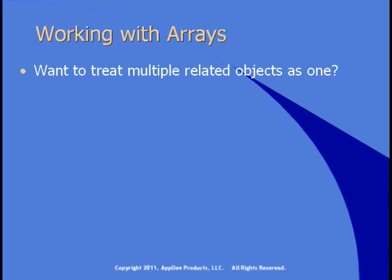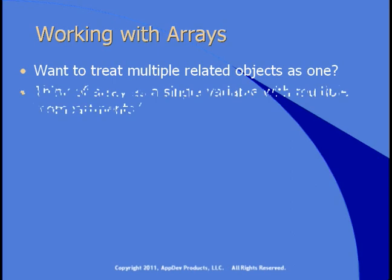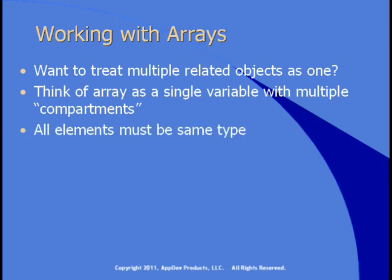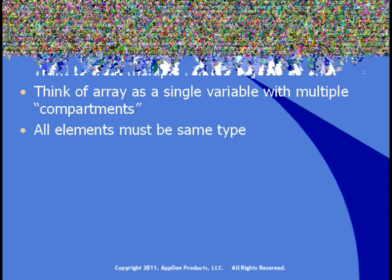What if you want to treat multiple related objects as if they were one object? That's an array. You can think of an array as a single variable with multiple compartments for data. All elements of the array must be of the same type.